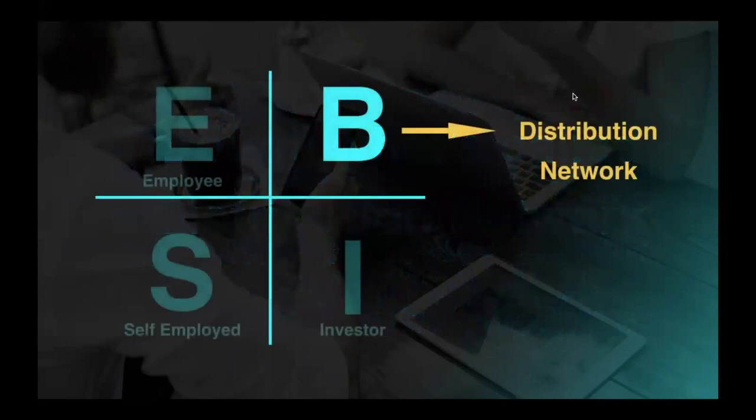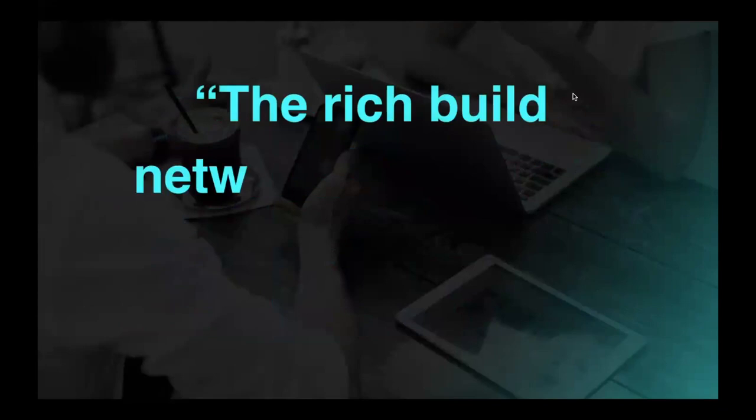Through what's called a distribution network. I'm going to explain what that is. A business system allows you to build a distribution network, which gives you walkaway income because you're leveraging the efforts of other people, a network of people, rather than just relying on your own efforts as you would do on the left side of the quadrant, where you can never create wealth as an employee or self-employed person.